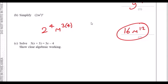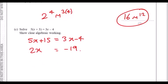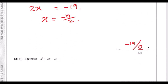Part c: solve 5(x + 3) = 3x − 4. First expand the bracket: 5x + 15 = 3x − 4. Collect x terms on the left: 5x − 3x = 2x. Move the constant: −4 − 15 = −19. So 2x = −19, giving x = −19/2.